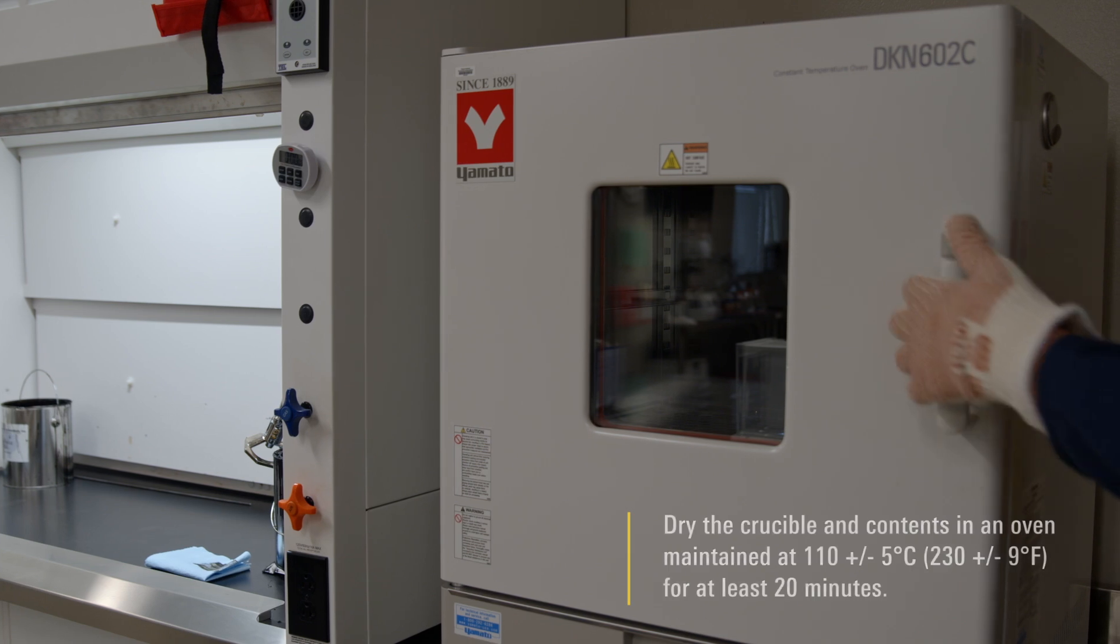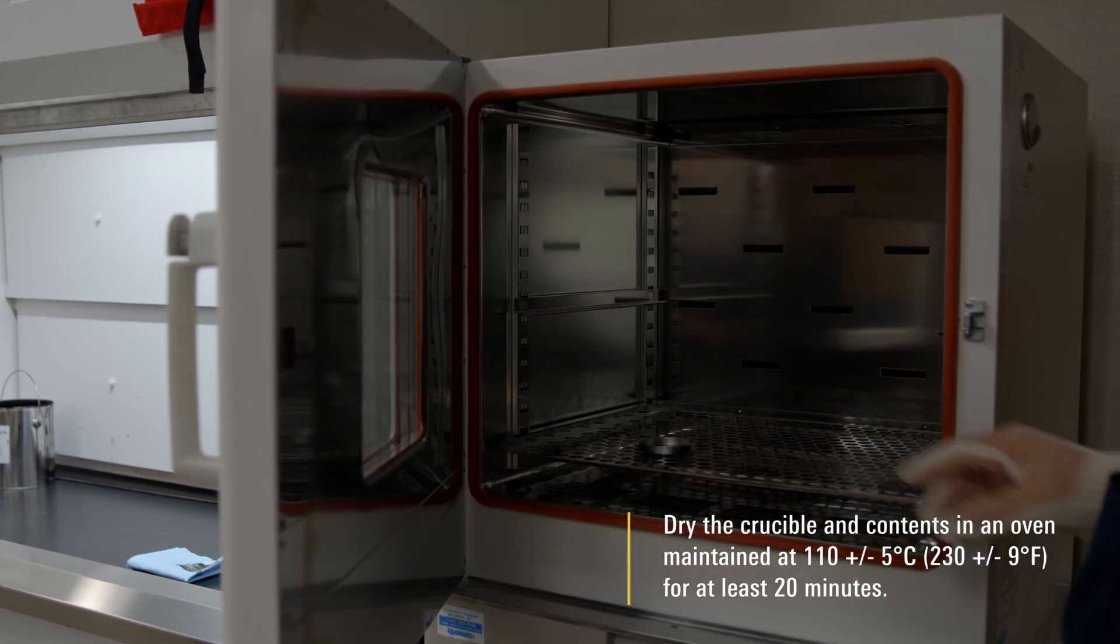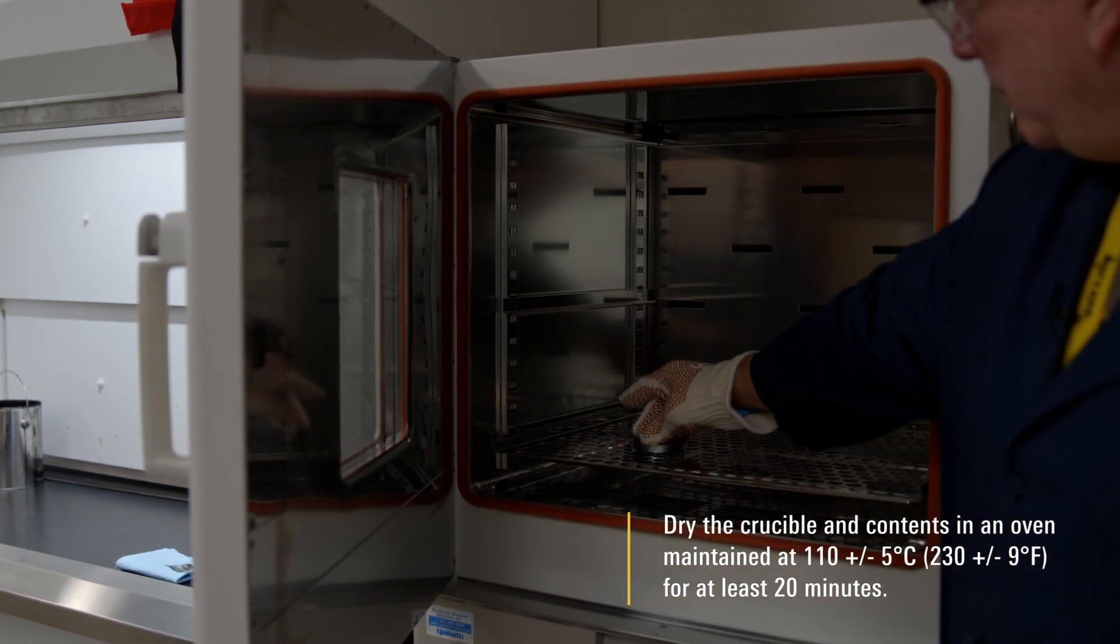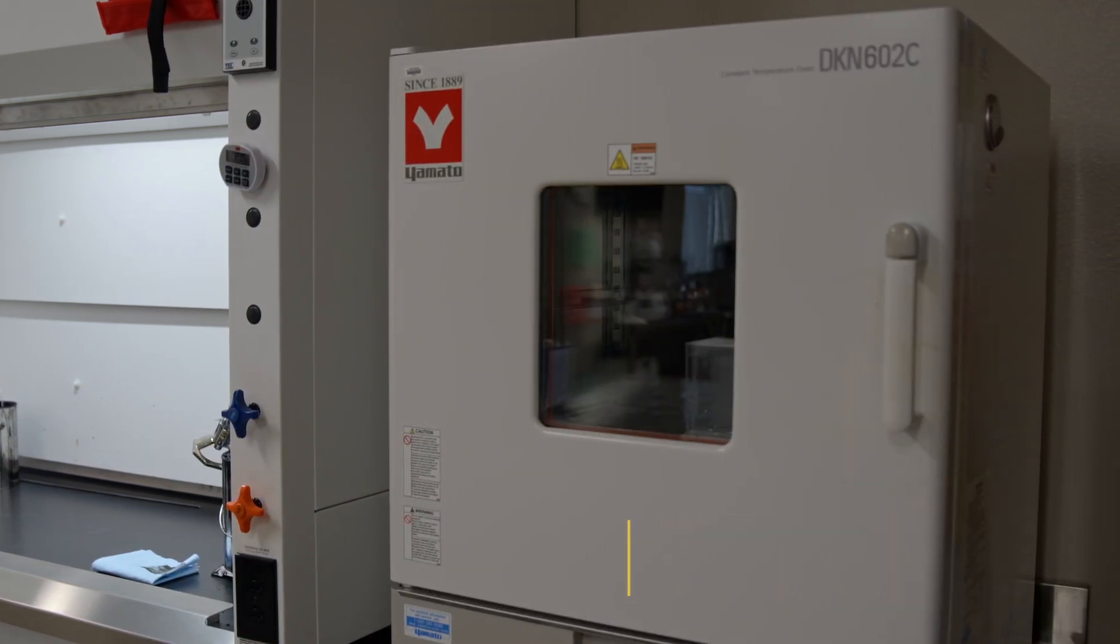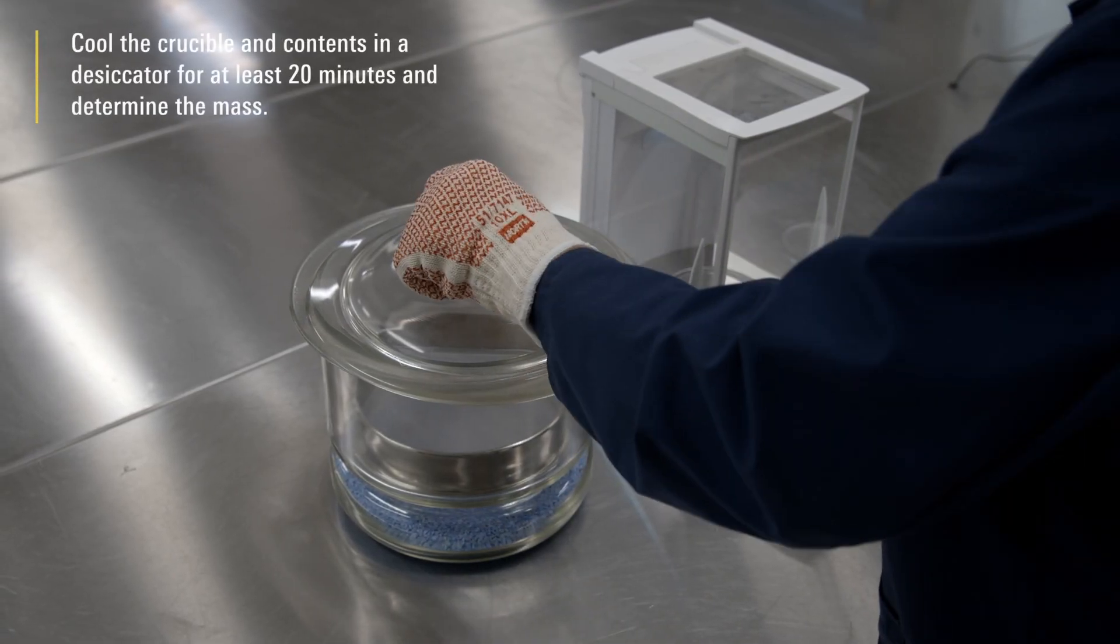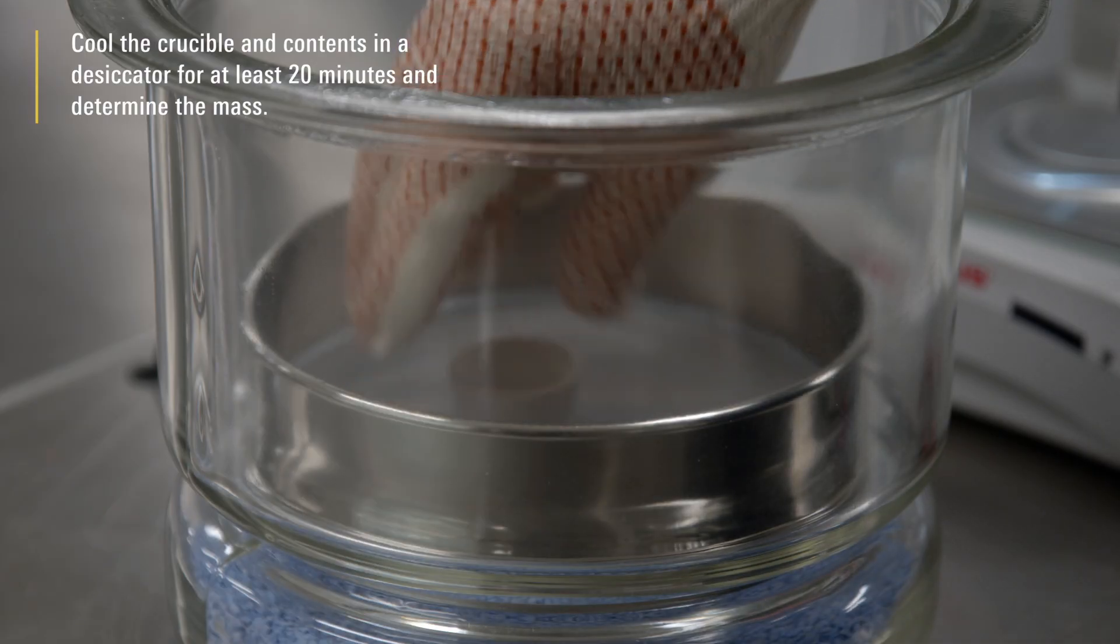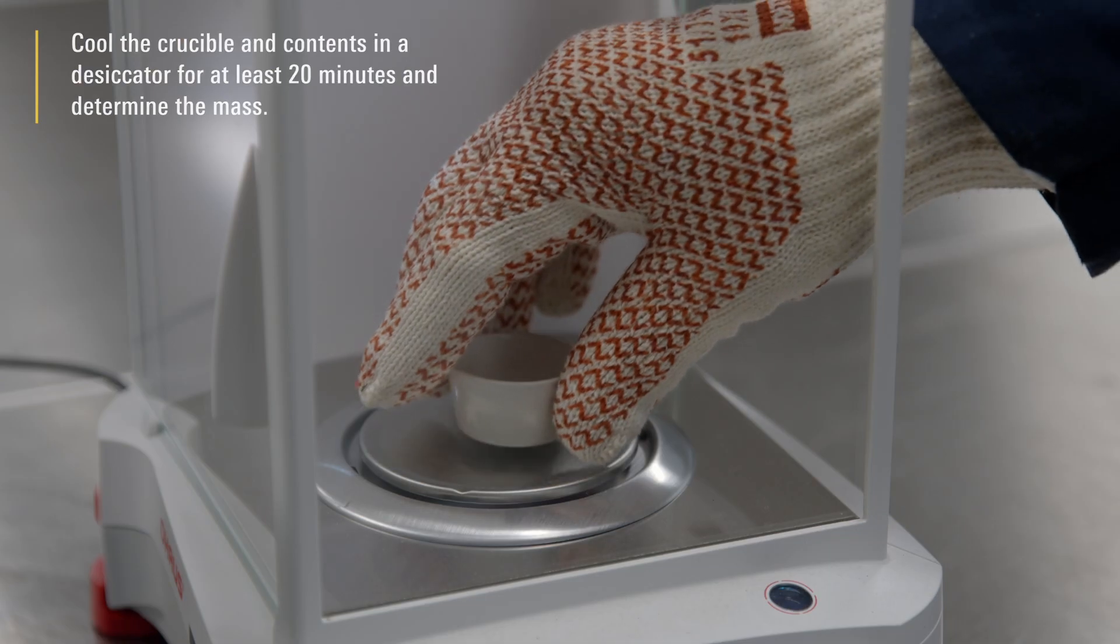Dry the crucible and contents in an oven maintained at 110±5 degrees Celsius for at least 20 minutes. Cool the crucible and contents in a desiccator for at least 20 minutes and determine the mass.